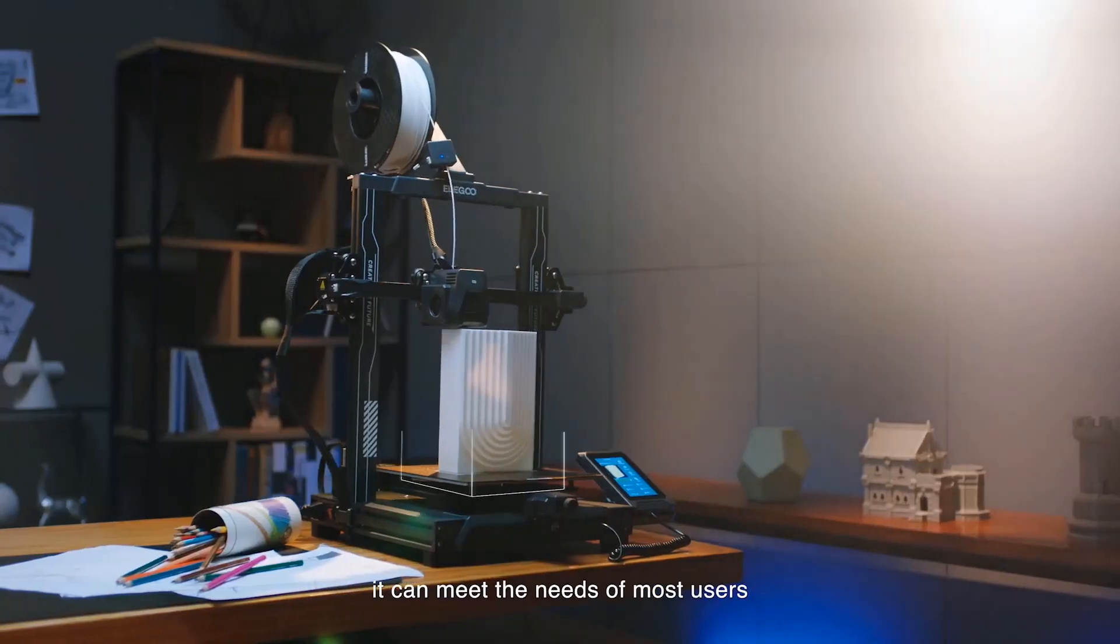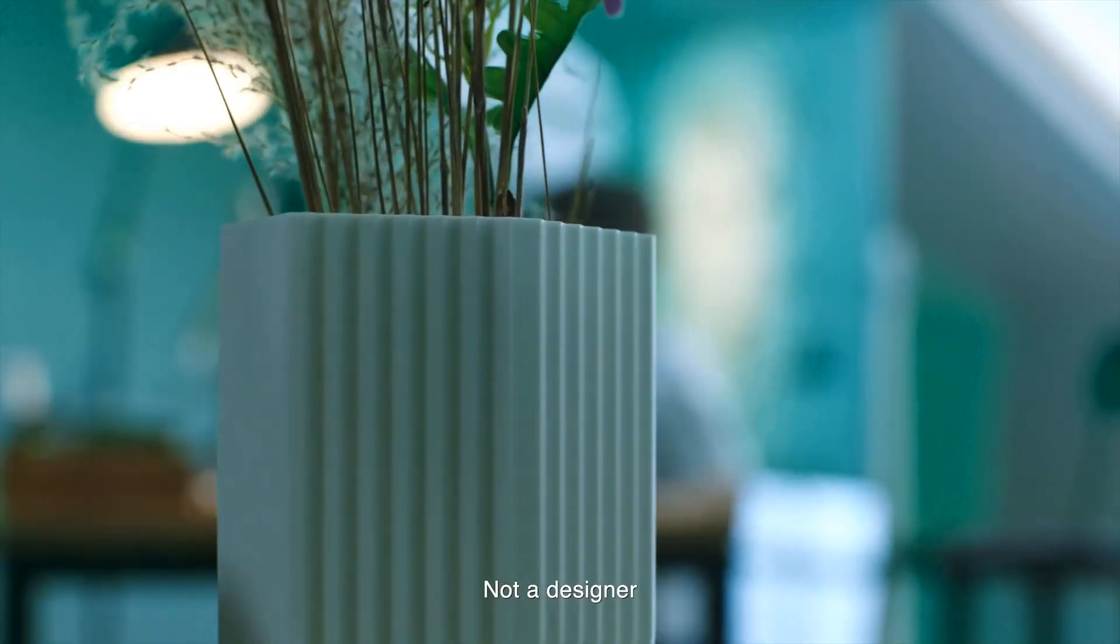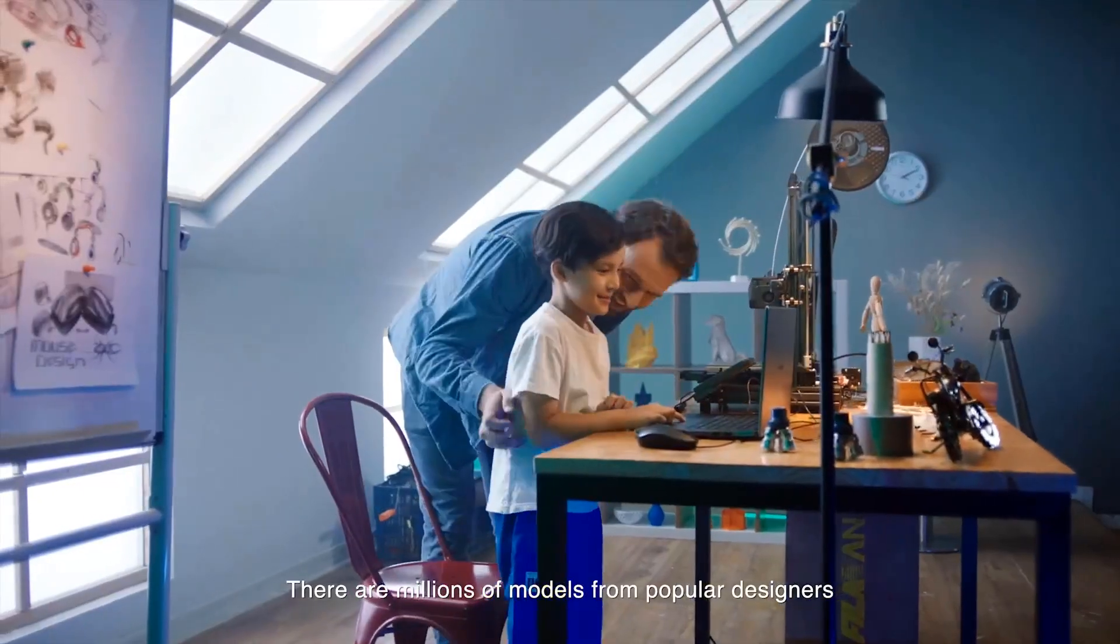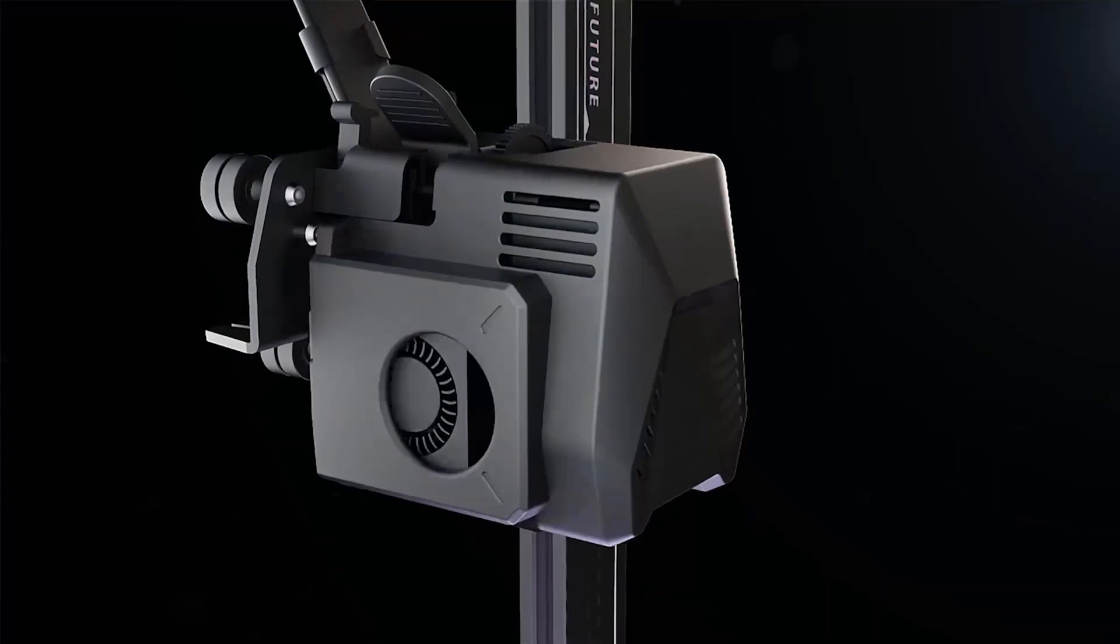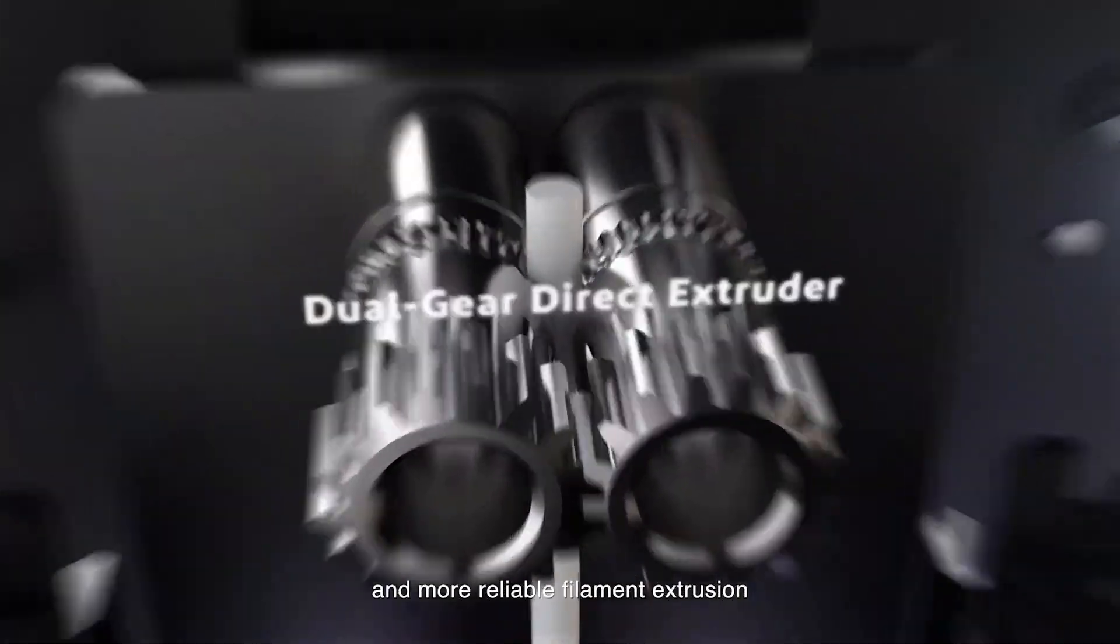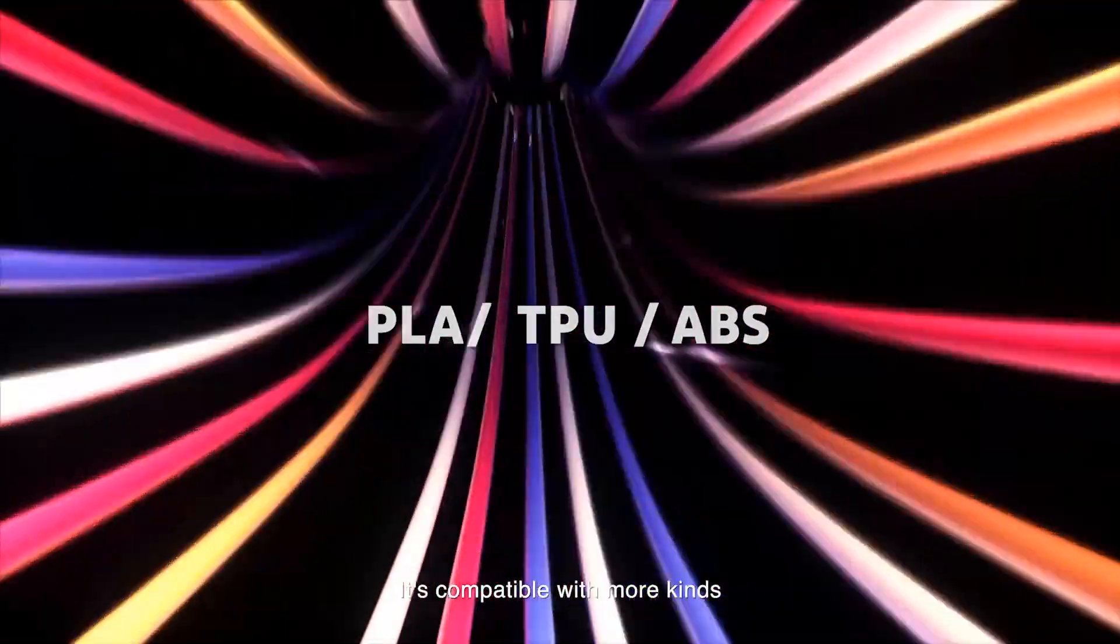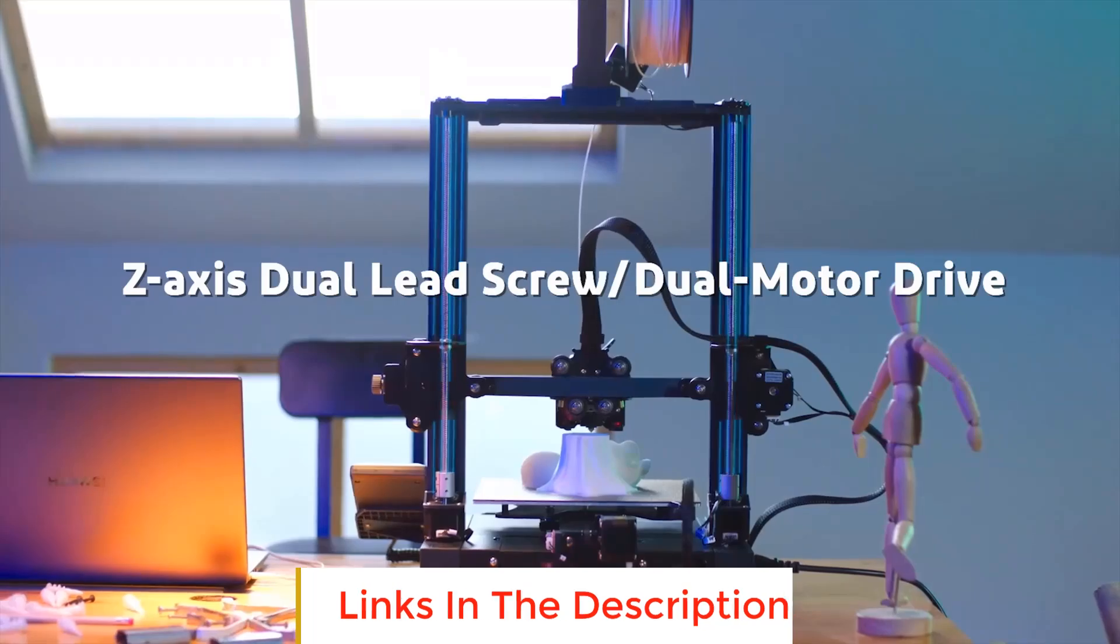The printer has a 225 by 225 by 218 millimeter build volume, enough for most common projects, though it might fall short for bigger builds. We found the Dual Gear Direct Extruder to be a standout feature. It handled various filaments like PLA, TPU, and PETG with ease, reducing clogging issues we've seen in other printers.